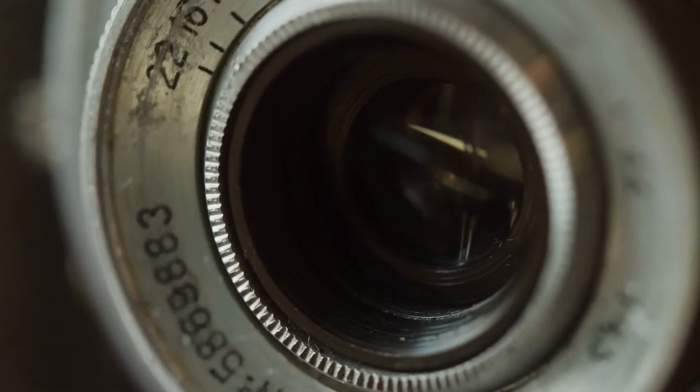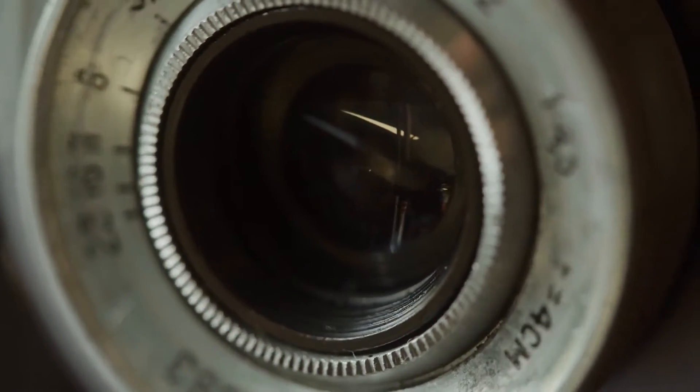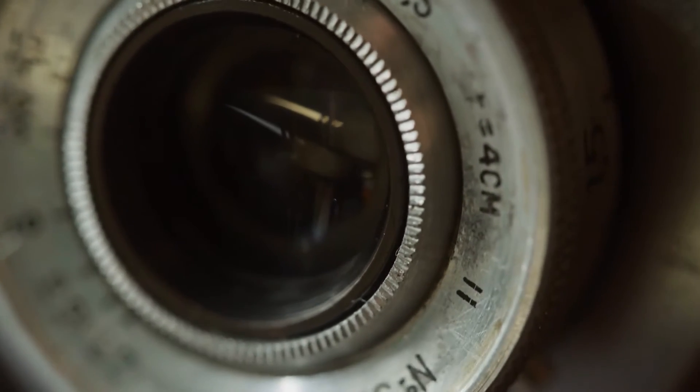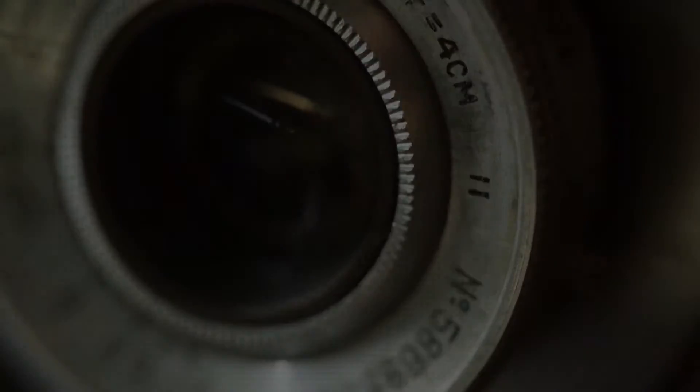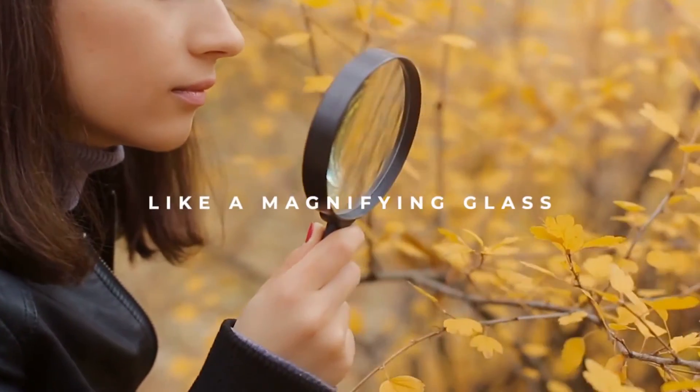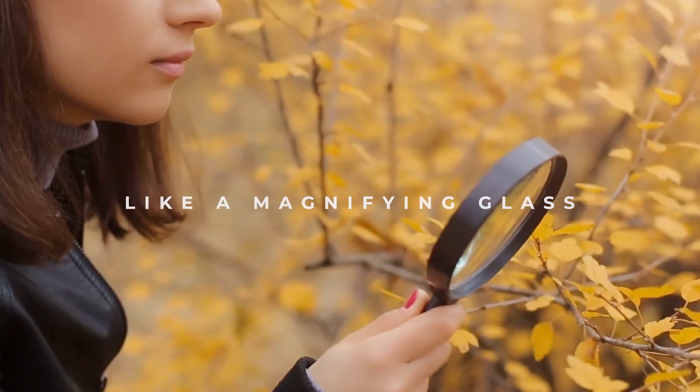This magnification can be increased or decreased depending on the distances between the lenses or mirrors and the eyepiece. A telescope is just like a magnifying glass, but with more power.